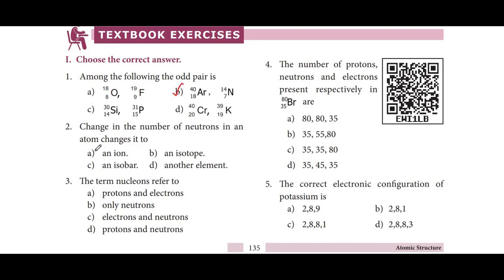Change in the number of neutrons in an atom changes it to an isotope. The term nucleons refers to protons and neutrons — those particles in the nucleus are called nucleons.